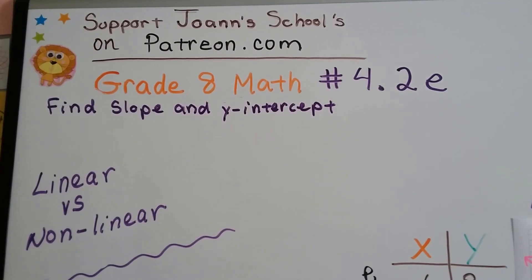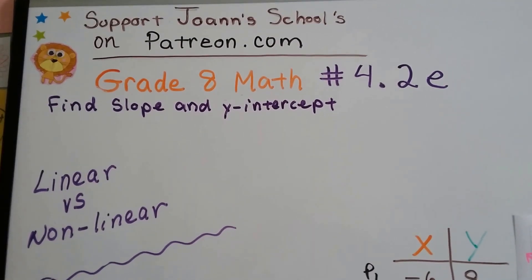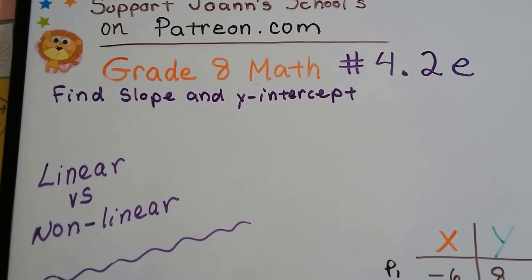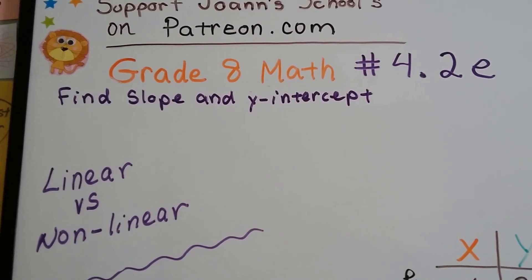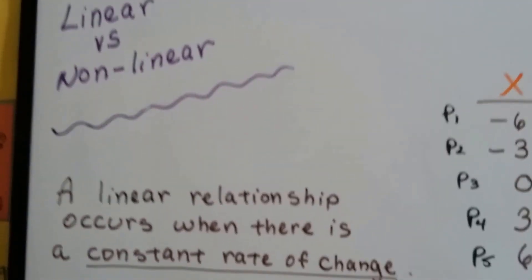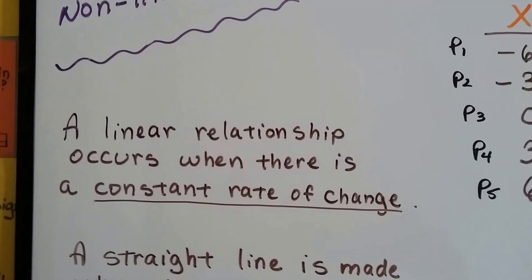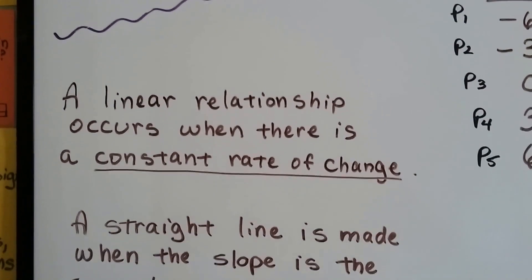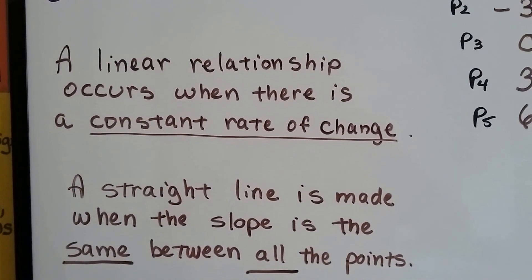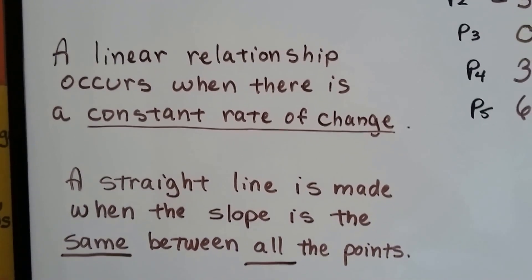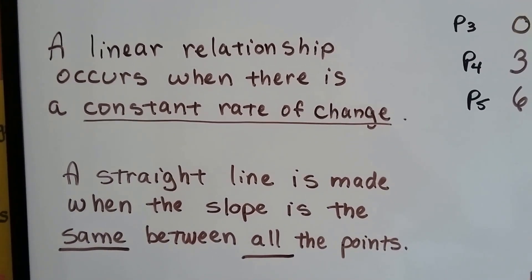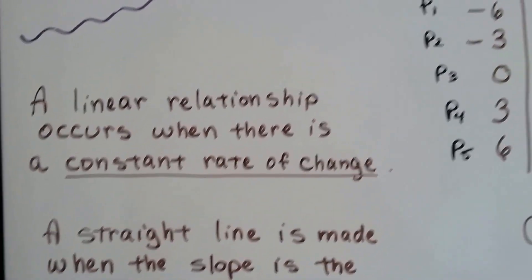Grade 8 math, number 4.2e: linear versus nonlinear. A linear relationship occurs when there's a constant rate of change. A straight line is made when the slope is the same between all the points.